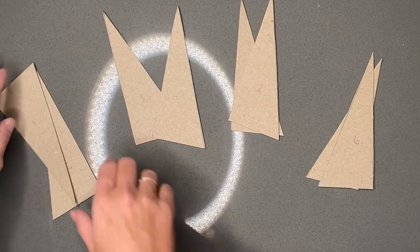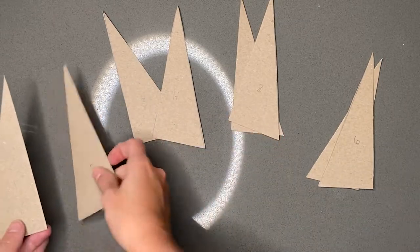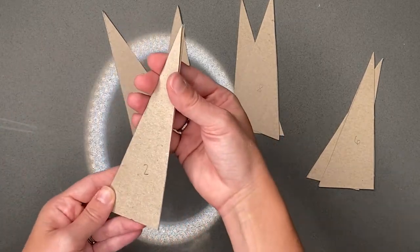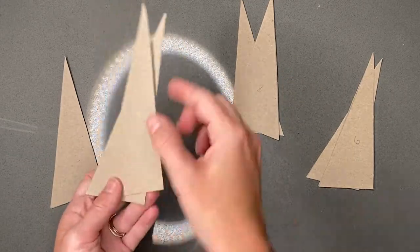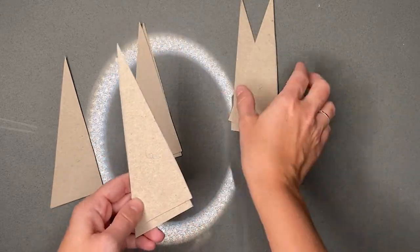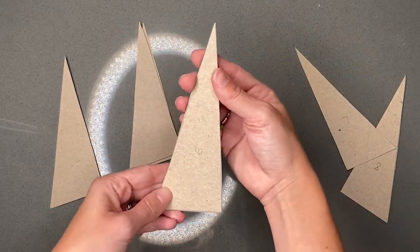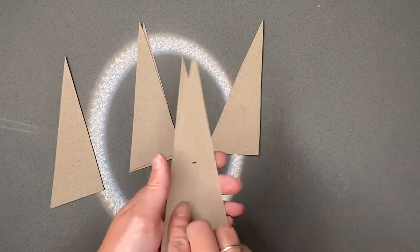I'm going to laminate these so that they're a little bit more sturdy because they are a little flimsy. So I'm going to match up one and two, three and four, five and six, seven and eight.